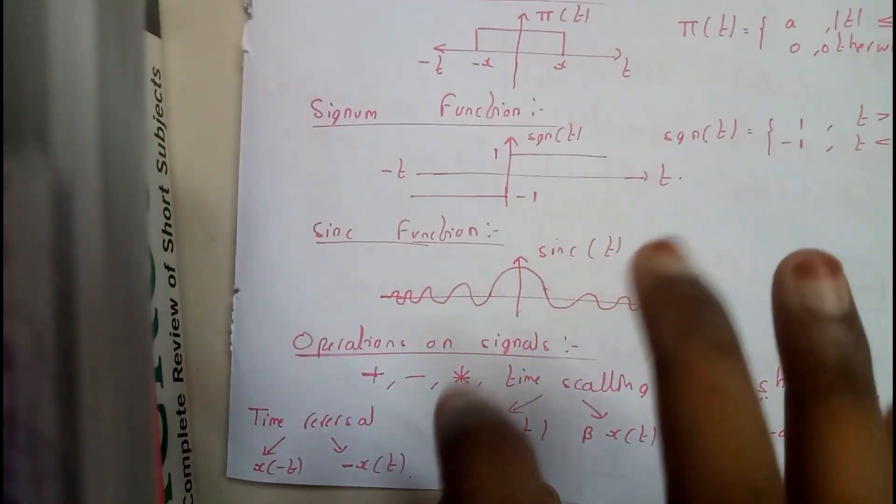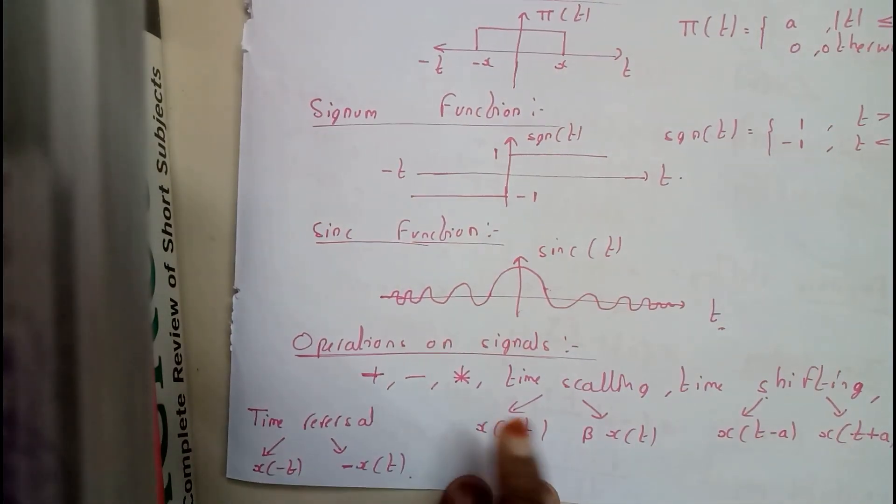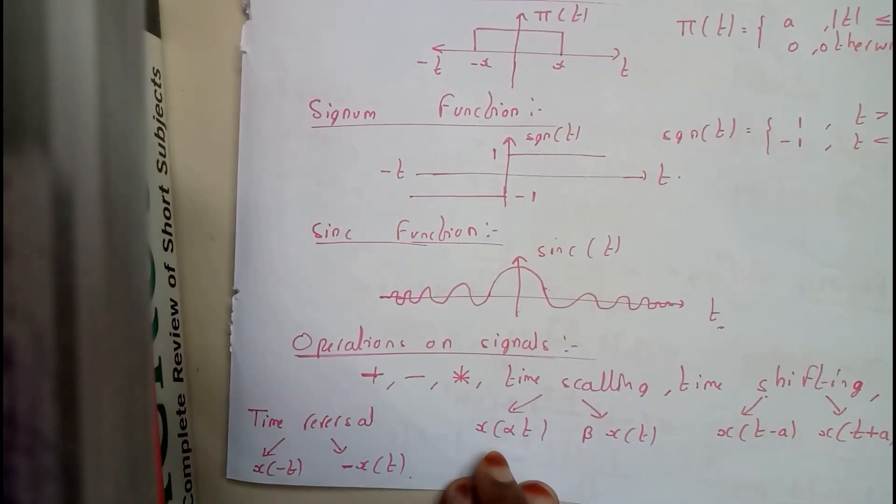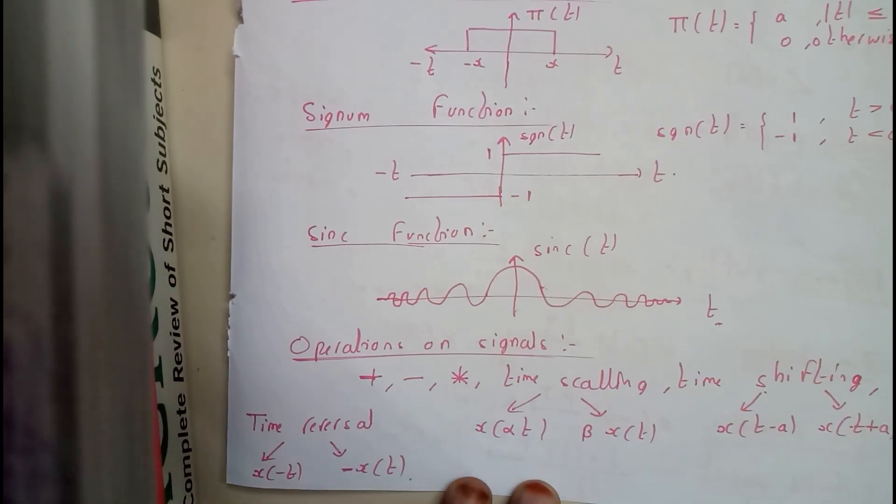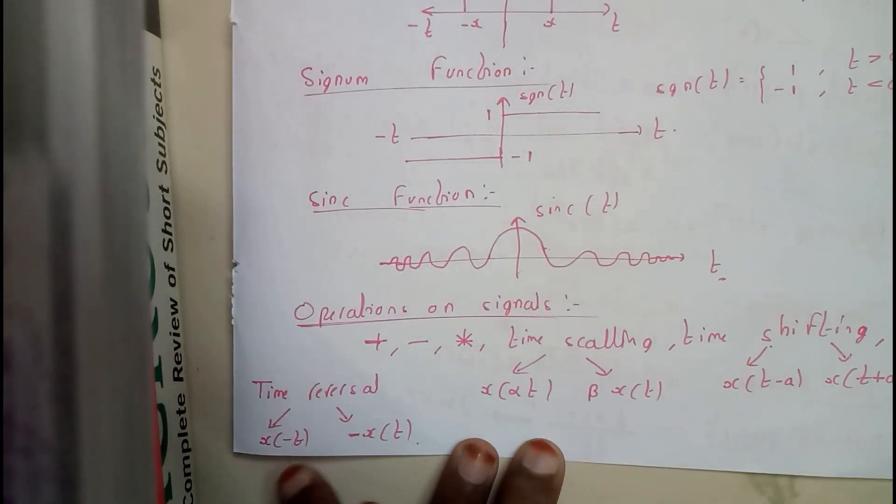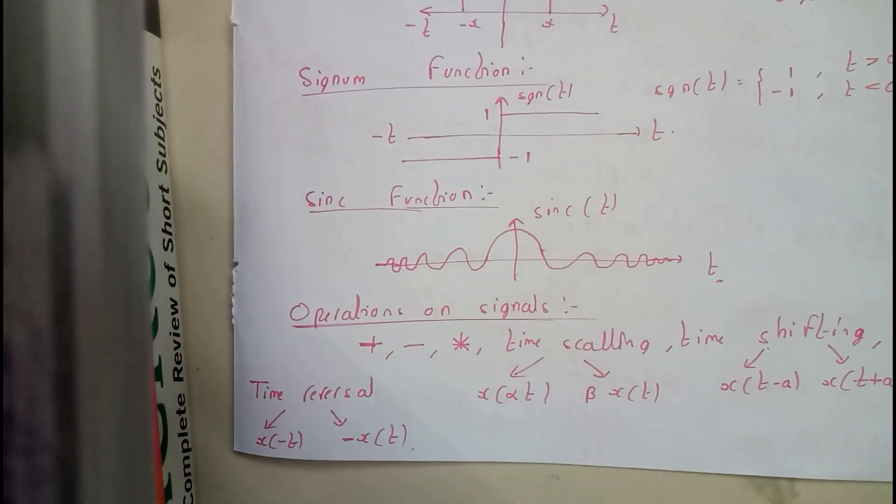Different operations we can do are addition, subtraction, multiplication, time scaling (internal alpha or external beta), time shifting (minus a and plus a), and time reversal (x of minus t).